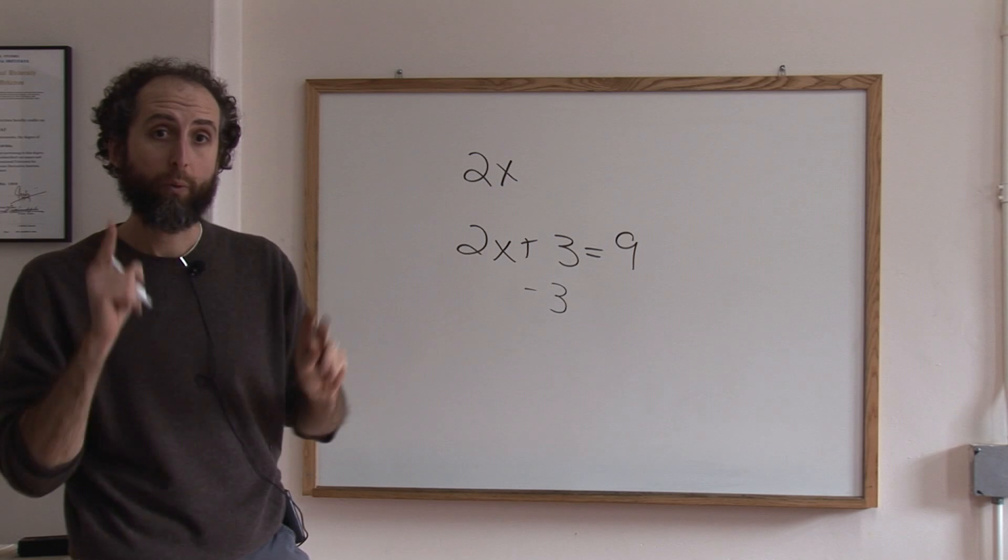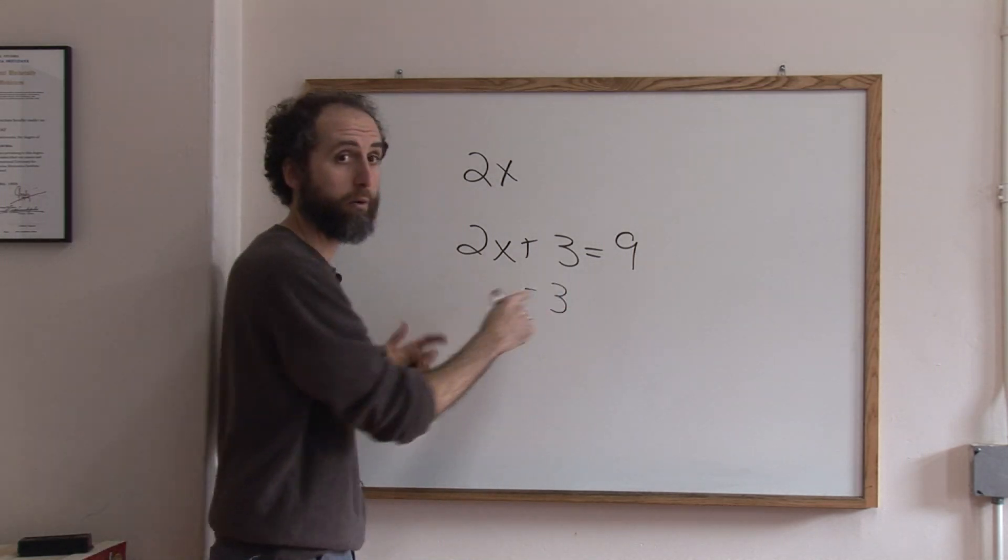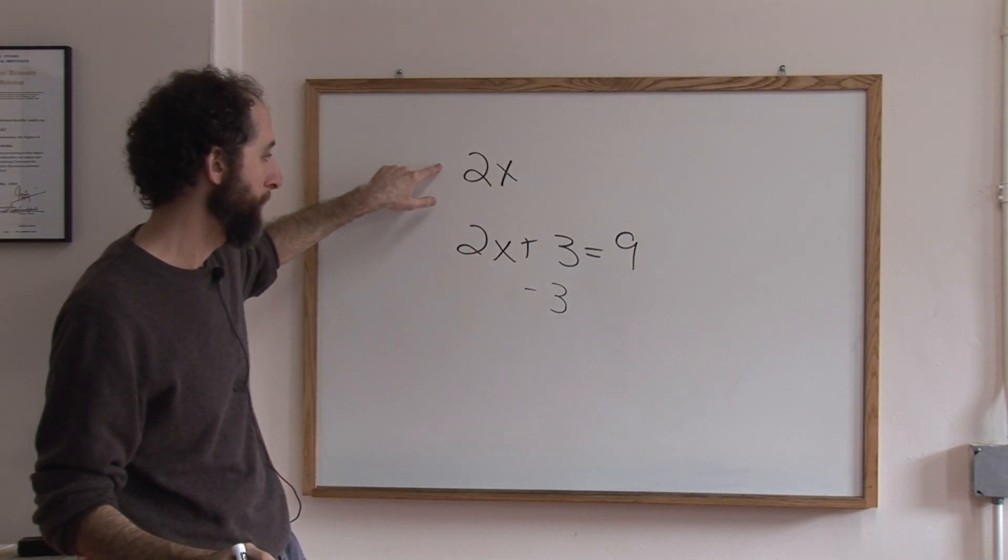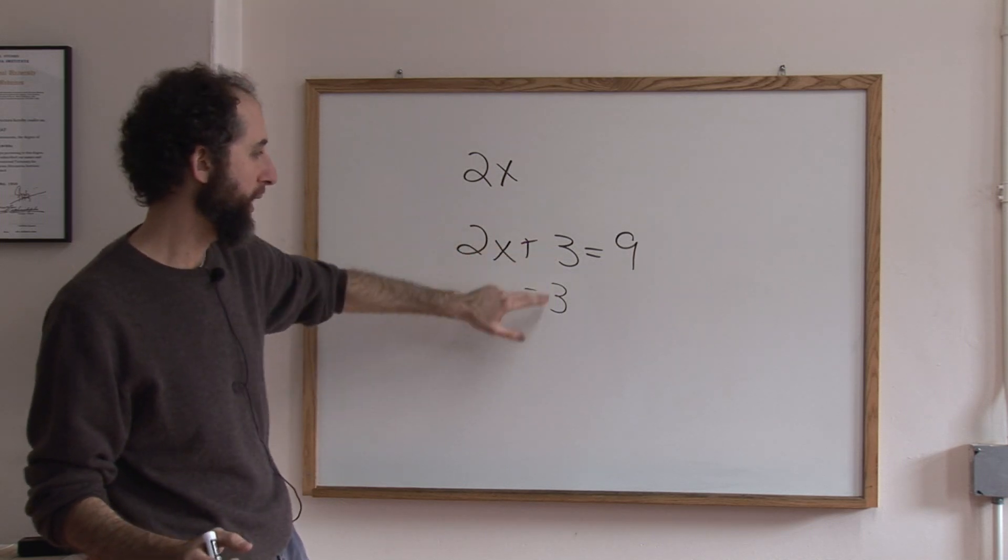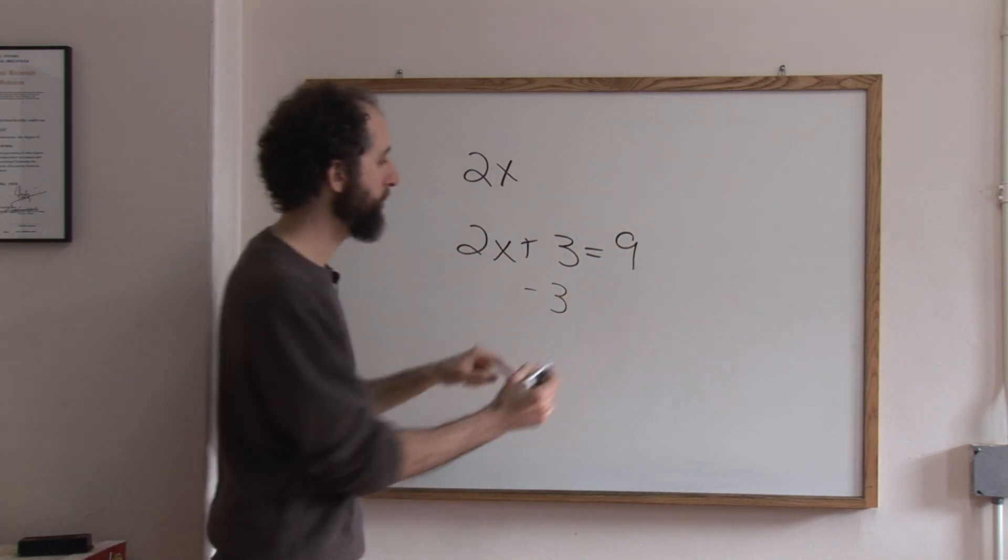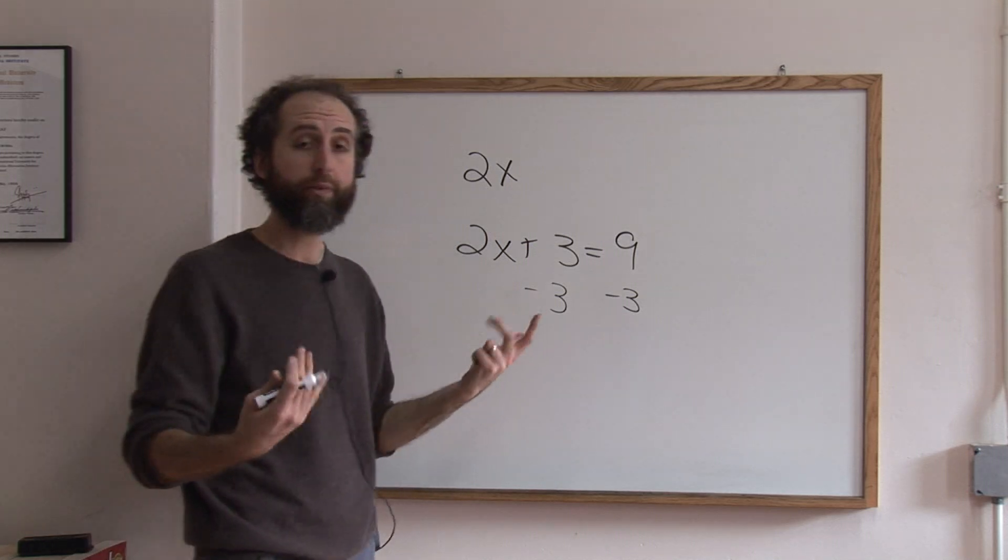Rule number three: whatever you do to one side, you have to do to the other. If you follow these three rules - don't be intimidated, to eliminate a number do the opposite, and whatever you do to one side do to the other - algebra is not so bad.